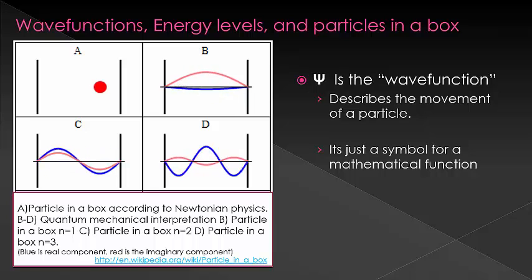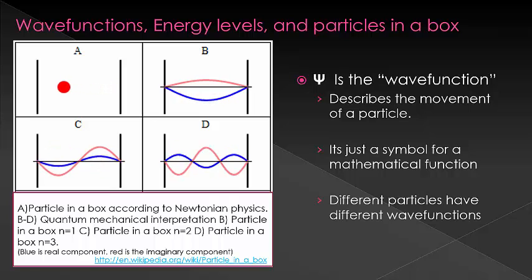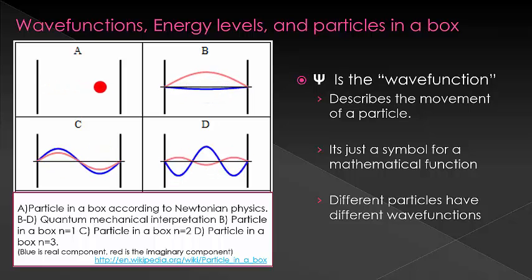Different particles are going to have different wave functions. So a particle in a box isn't described by the same wave function as a hydrogen electron is, or that a helium's electron is. So the process we are going to step through today would have to be repeated for each new type of particle to find its properties.